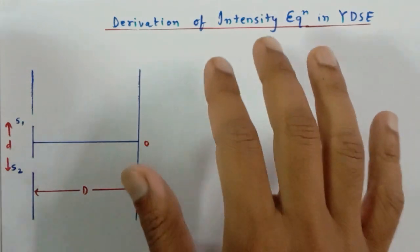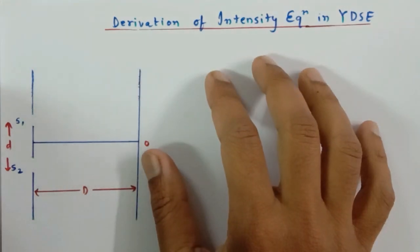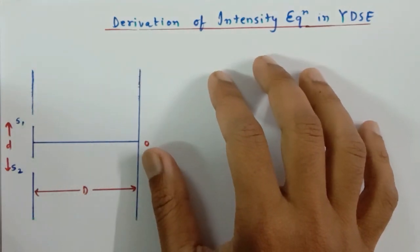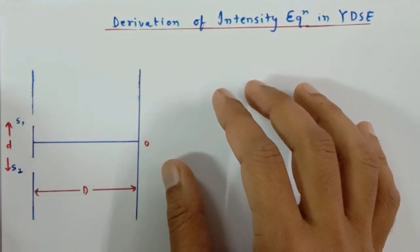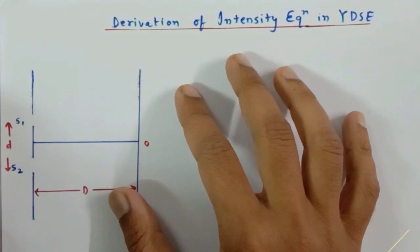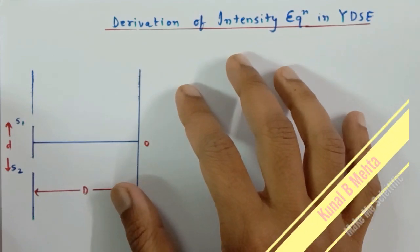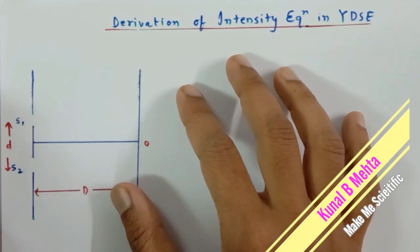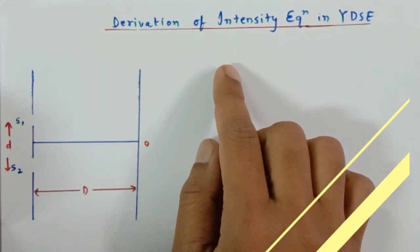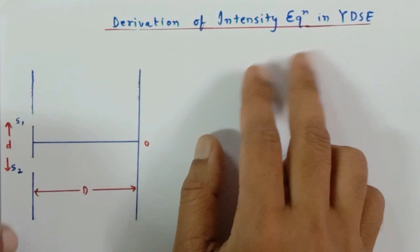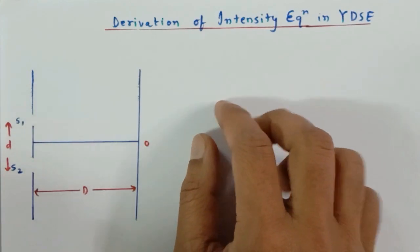Hello scientific genius people! How are you today? We are going to continue our discussion on the interference lecture series, and today we are going to discuss the derivation of the intensity equation in Young's double slit experiment.